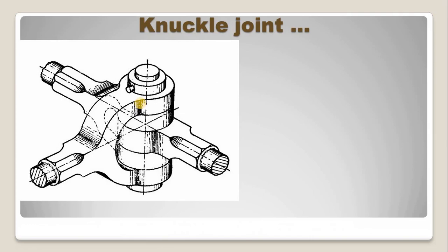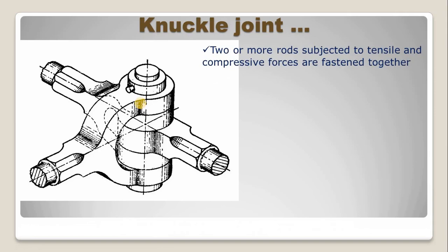This is the diagram of a knuckle joint which is used for the connection of two rods. In this diagram, it has three rods which are connected together by means of this knuckle pin. This knuckle pin is inserted vertically through the eyes. Two or more rods subjected to tensile and compressive forces are fastened together.